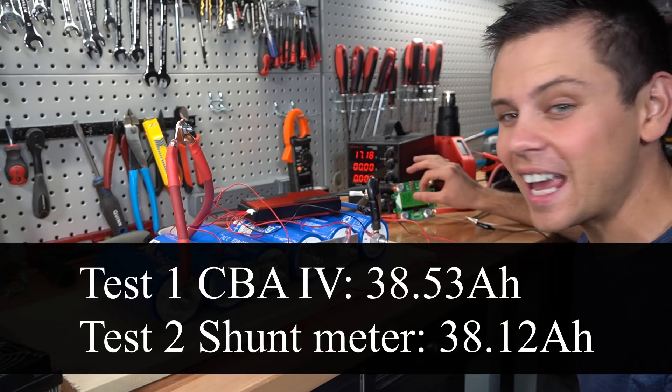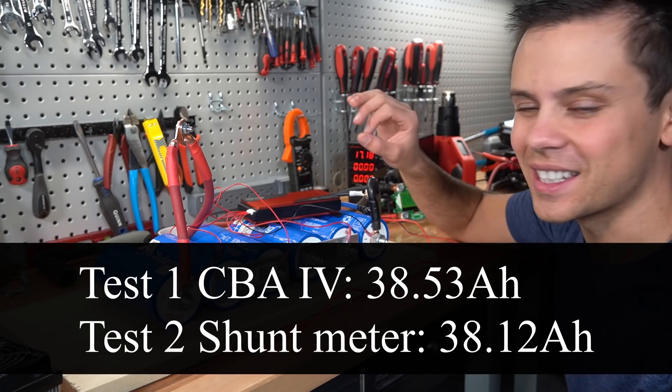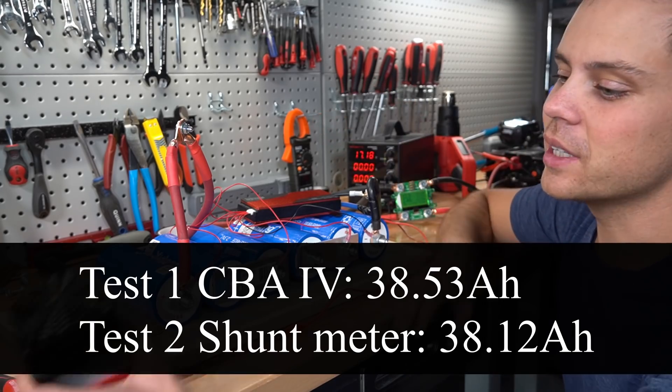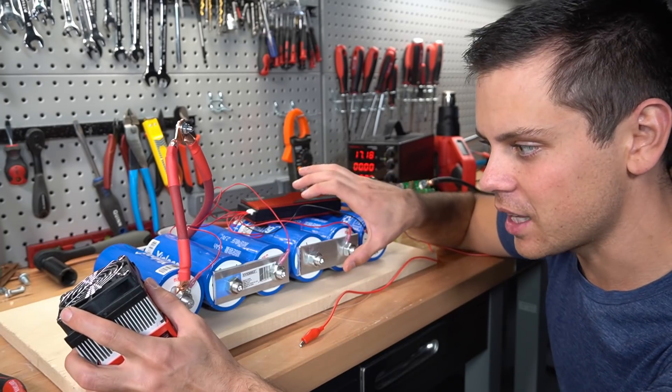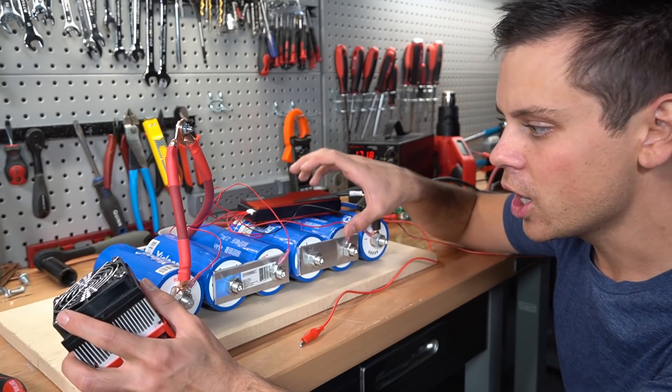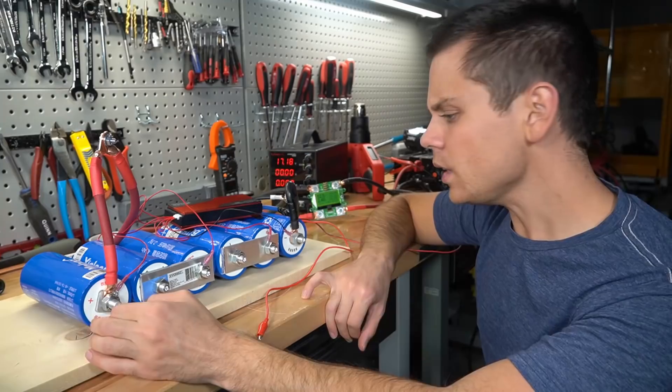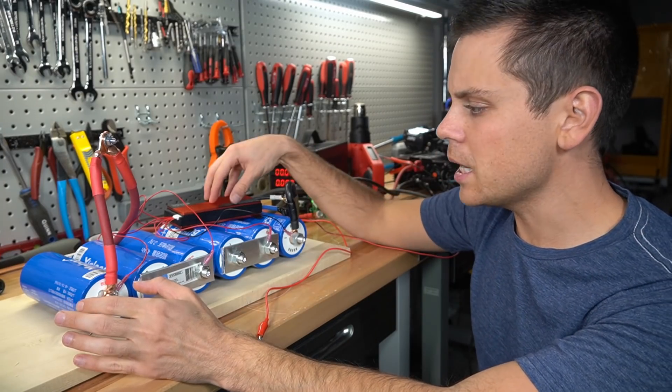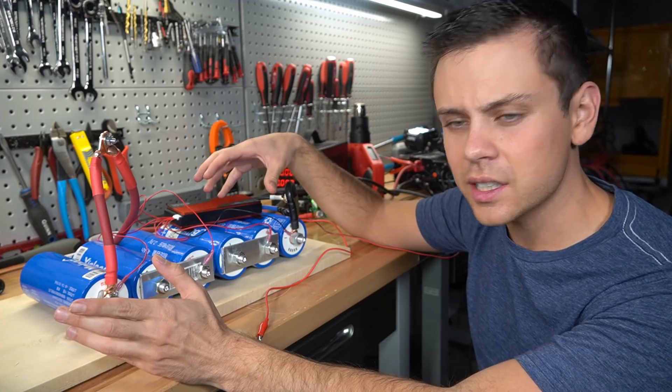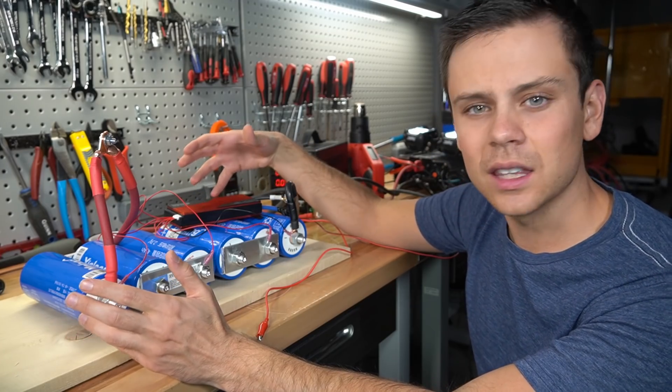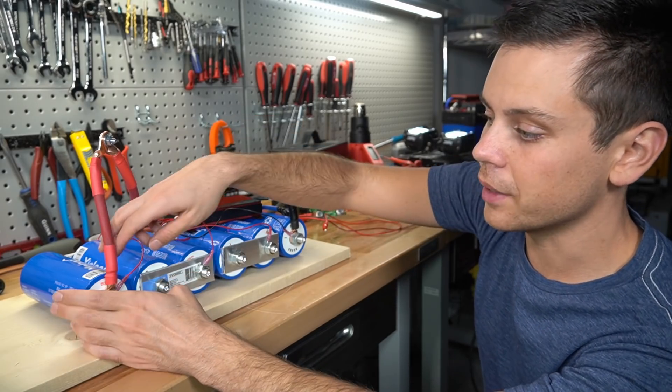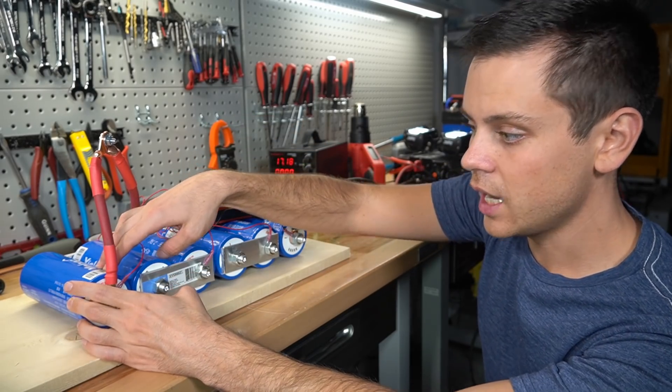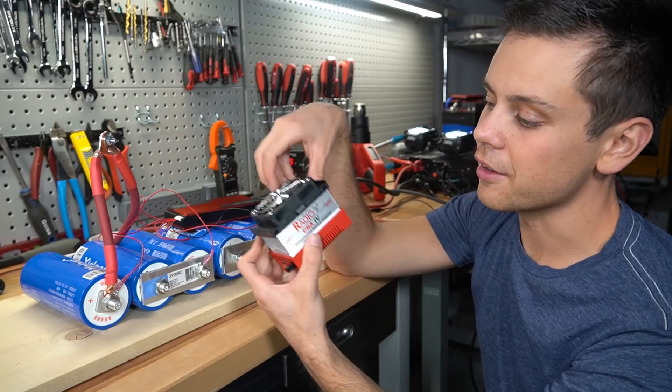And the results are 38 amp hours. We got practically the same exact results as we did with the CBA-4. So either these are grade B cells and they are not labeled correctly, or we have a bad cell. The next possibility is that the BMS high voltage and low voltage disconnect is not allowing us to get the full capacity of these cells. So what we're going to do is charge up a single Yinglong cell and do a cycle test with the CBA-4.